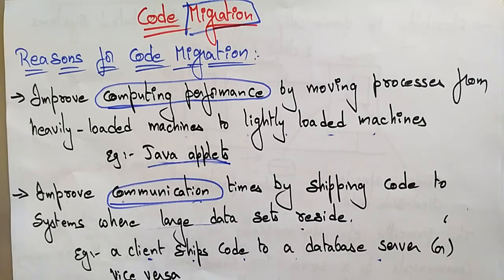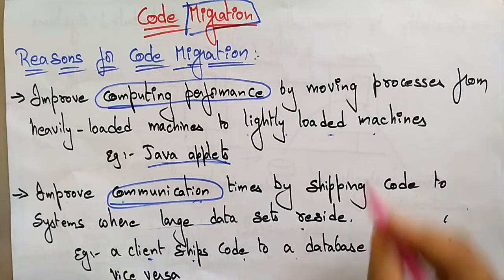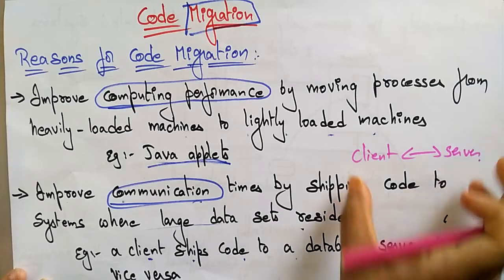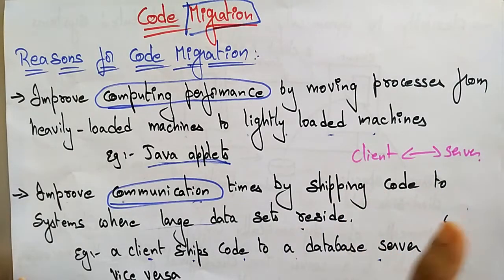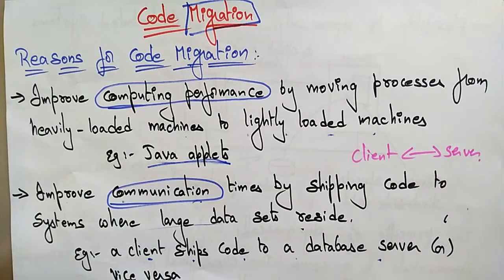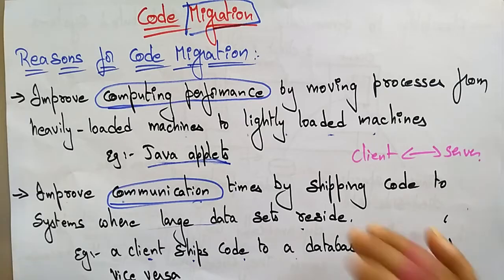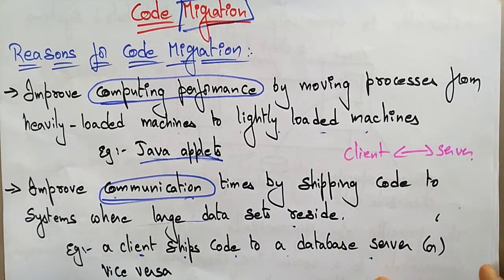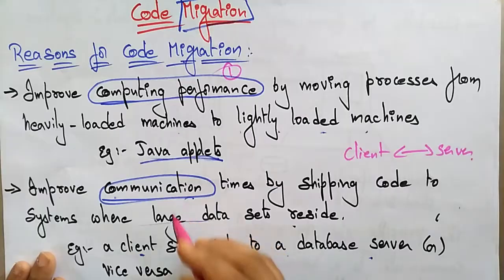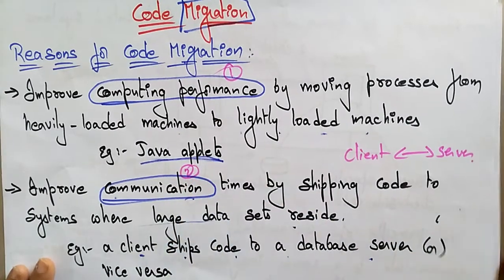There is a way of communication from client to server and server to client. To improve this communication, code is shipped for large data sets residing on either the client or server side. These are the two reasons for using code migration: first, improving computing performance, and second, improving communication.